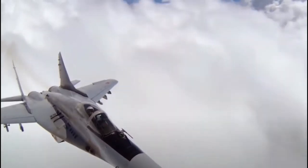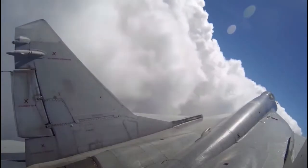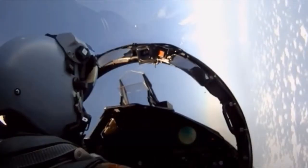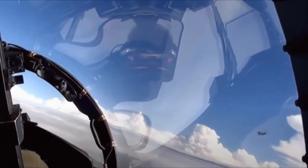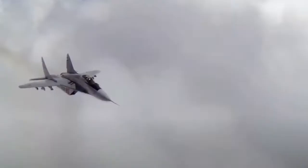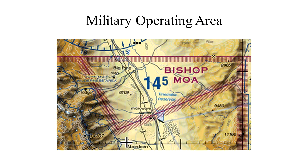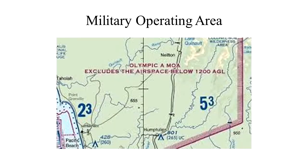Military operation areas, or MOAs, consist of airspace with defined vertical and lateral limits established for the purpose of separating certain military training activities from IFR traffic. Whenever a MOA is being used, non-participating IFR traffic may be cleared through a MOA if IFR separation can be provided by ATC; otherwise, ATC reroutes or restricts non-participating IFR traffic. MOAs are depicted on sectional, VFR terminal area, and en route low altitude charts and are not numbered — they just have a name, like Olympic MOA.